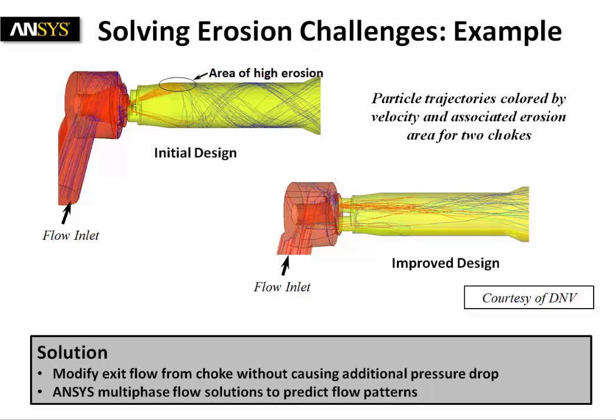Here simulation was used to modify the exit flow from the choke without causing additional pressure drop. By studying different designs, as you can see on the right in the improved design, they were able to design a system with very low erosion.